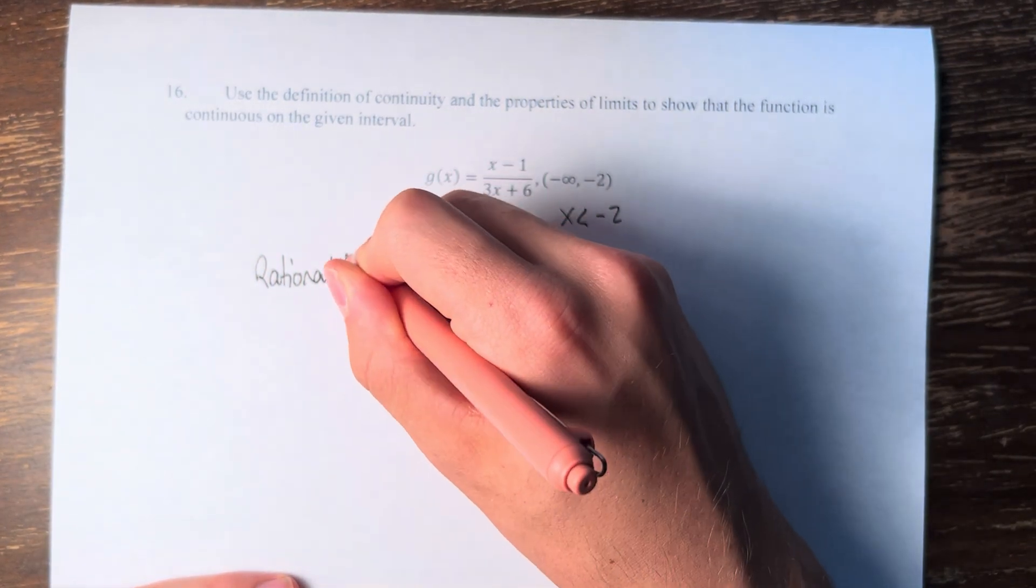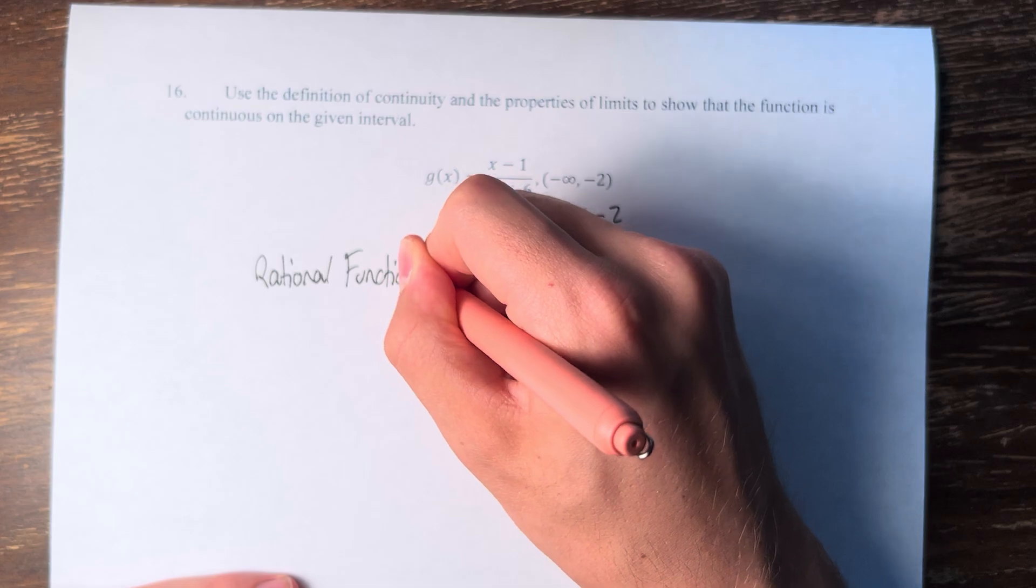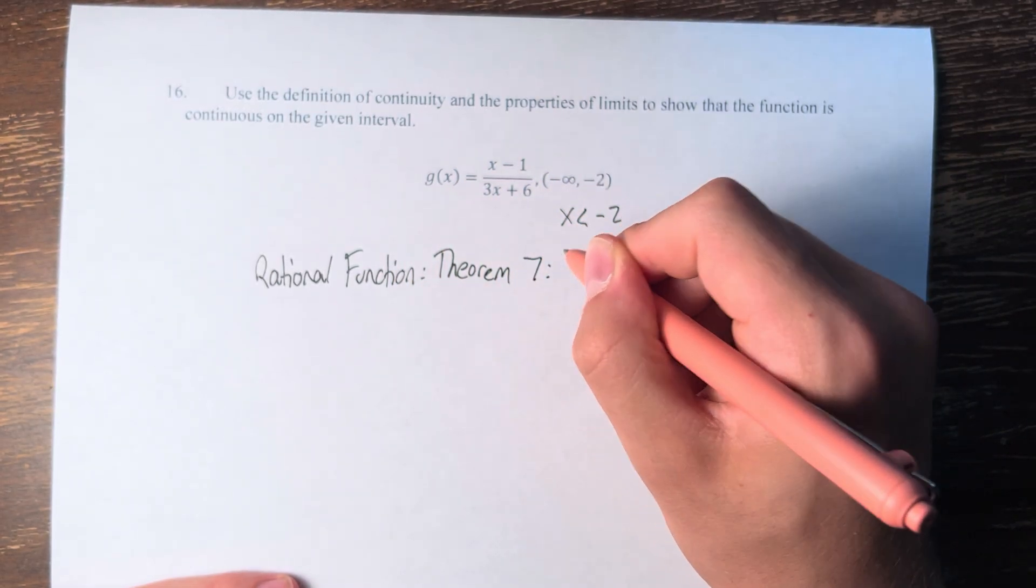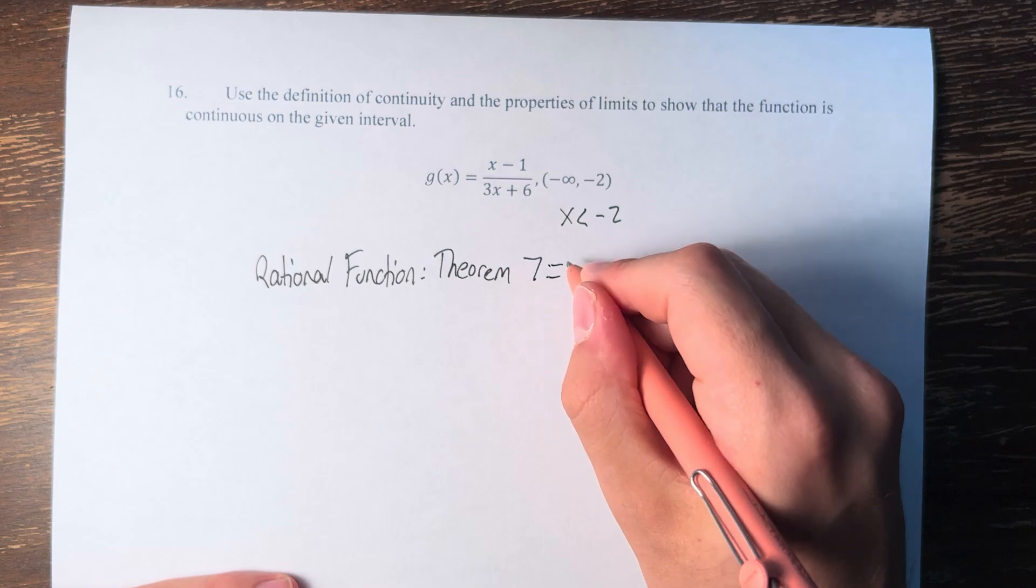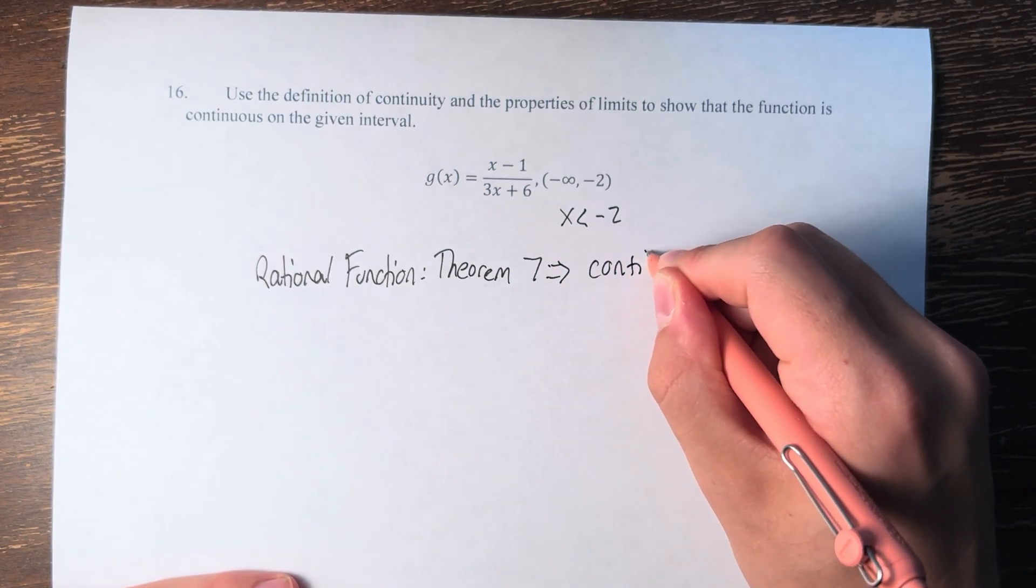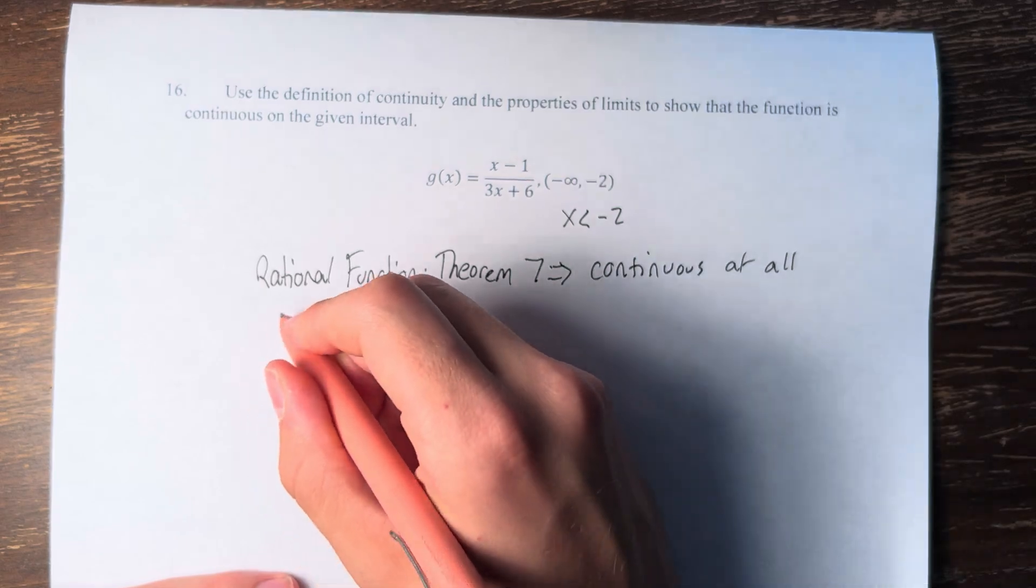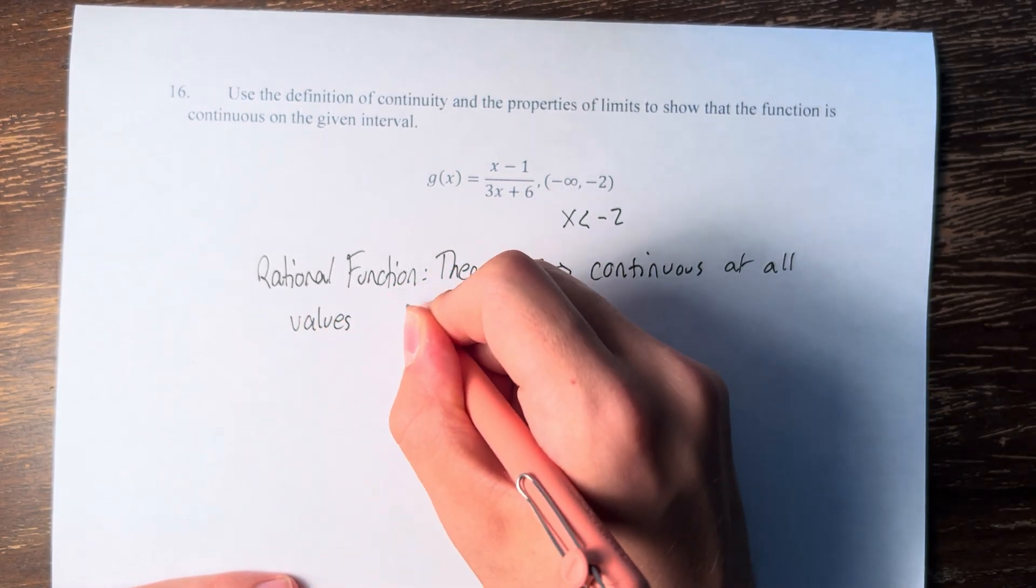And we know from theorem 7 that rational functions are continuous at all values within their domain.